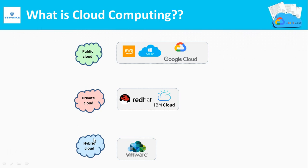What is cloud computing and its types? The practice of using a network of remote servers, storage, databases, networks, and softwares hosted on the internet rather than on a local computer or server is called cloud computing. We are going to pay for the cloud services that we use. Cloud computing is often classified into three types: public cloud, private cloud, and hybrid cloud.